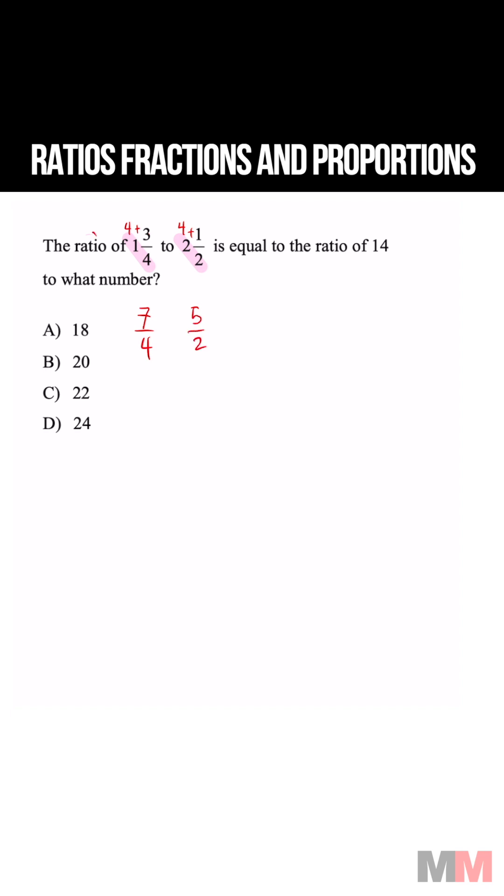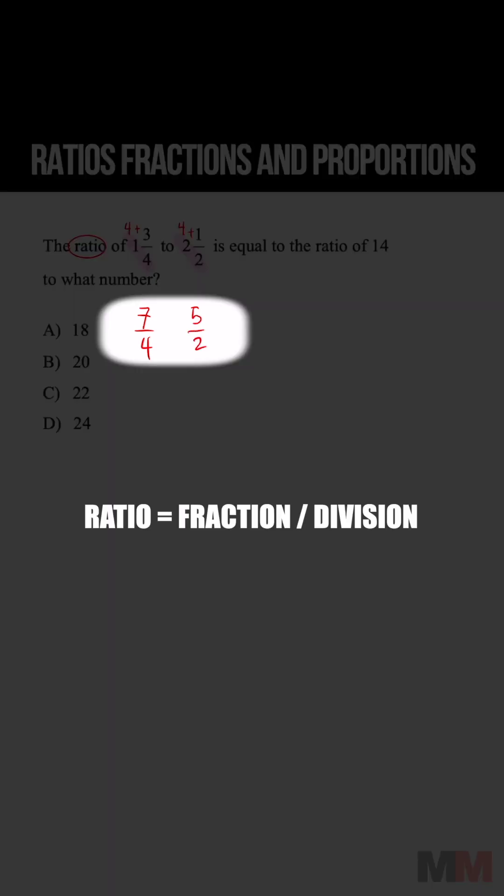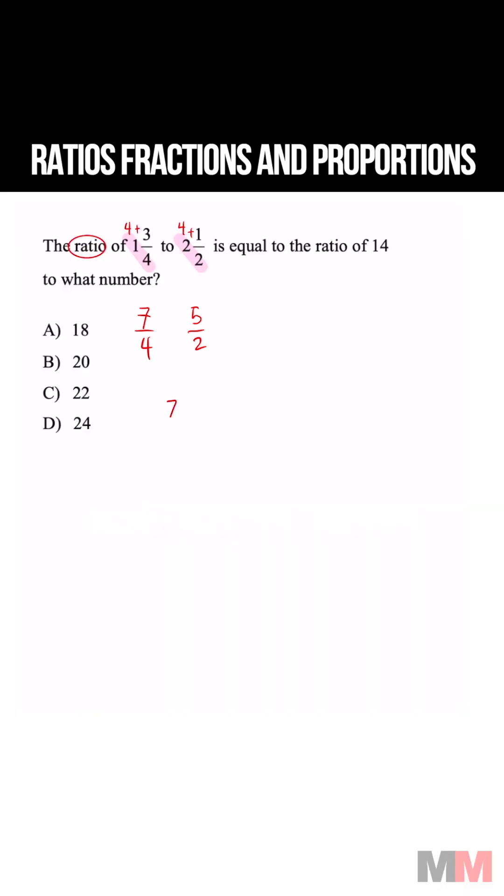If we're taking the ratio of something, then all we have to do is divide these two terms. So that's going to be 7 fourths divided by 5 halves is equal to the ratio of 14 goes on the top to what number?